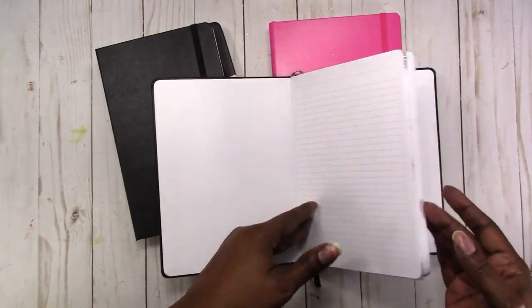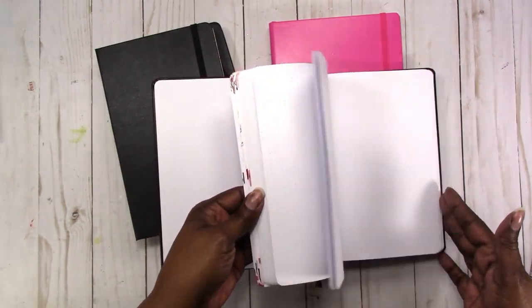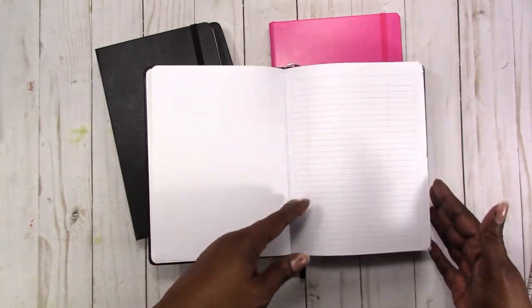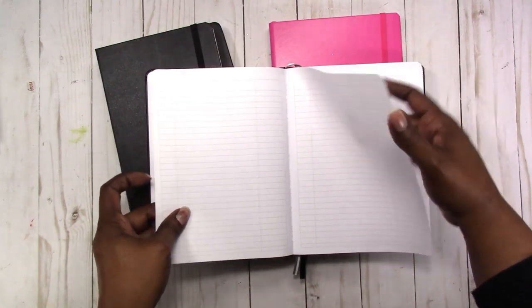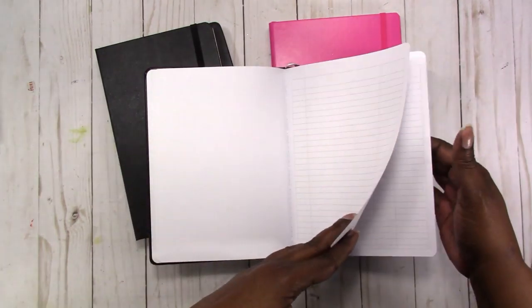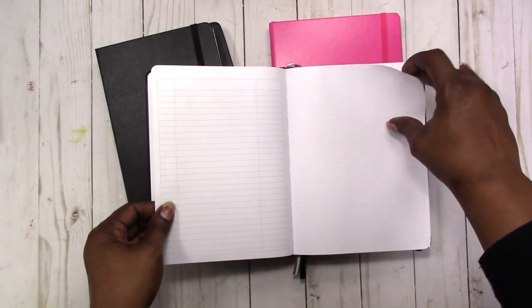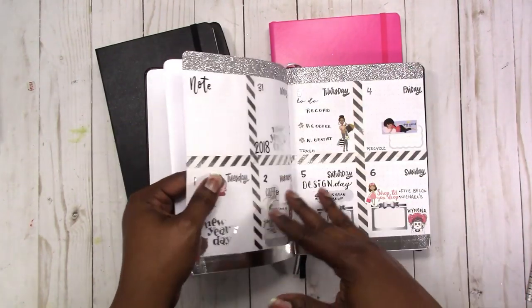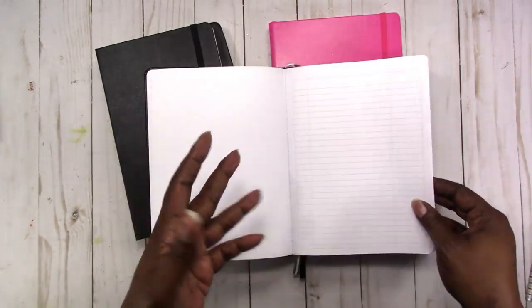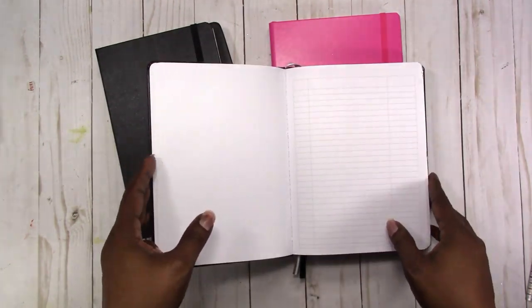Even though the pages are not numbered, they're just plain pages, there is an index space in the front of the book. It's four pages worth of index space. I wasn't sure exactly how I was going to use this, so when I started using it as a planner I just left a few extra pages.